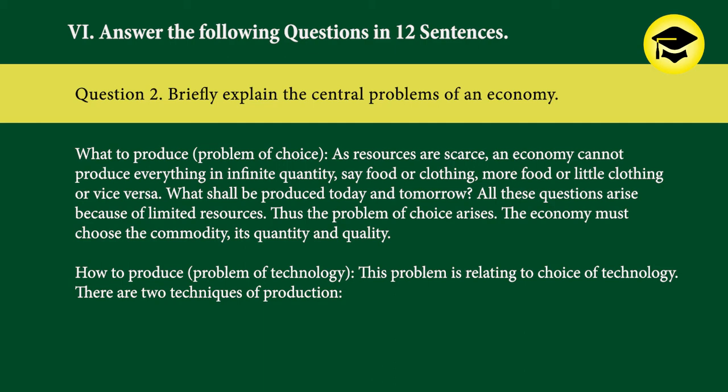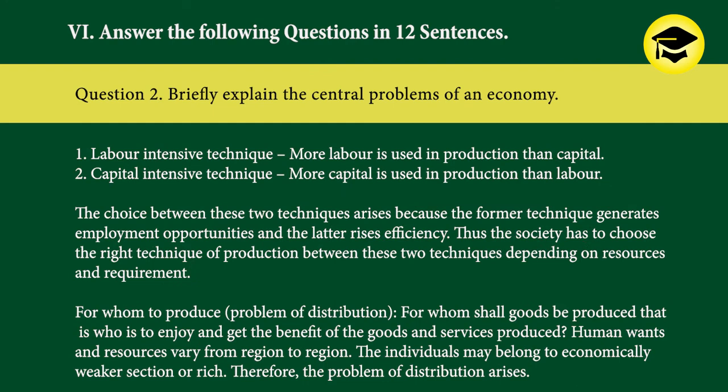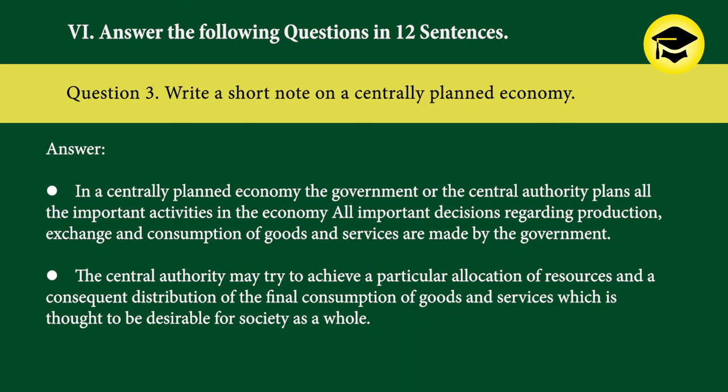How to produce (problem of technology): this problem relates to the choice of technology. There are two techniques of production — labor intensive technique (more labor used than capital) and capital intensive technique (more capital used than labor). The choice between these arises because the former generates employment opportunities and the latter raises efficiency; the society must choose the right technique depending on resources and requirement. For whom to produce (problem of distribution): who is to enjoy and benefit from the goods and services produced? Human wants and resources vary from region to region; individuals may belong to economically weaker sections or the rich, hence the problem of distribution arises.